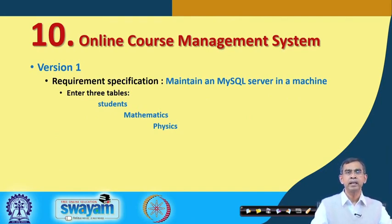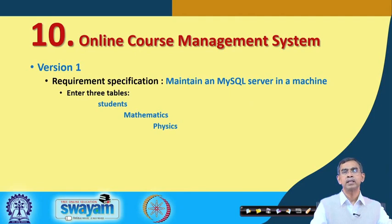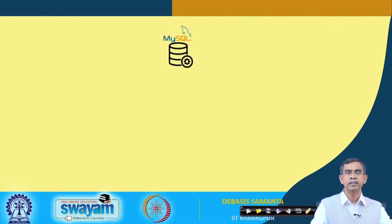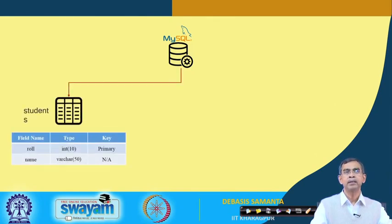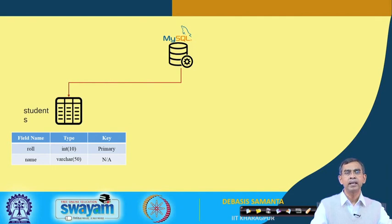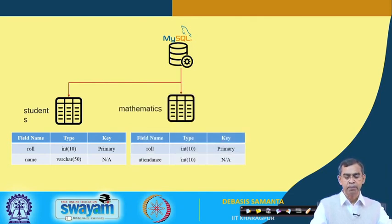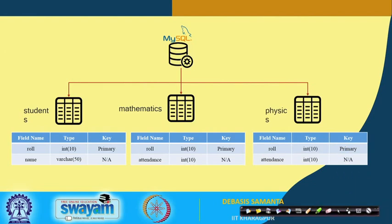For simplicity, maintain a database server on a machine connected to the network. The database server contains three tables: a student table, a mathematics table, and a physics table, all maintained in the MySQL server. For the student table, fields include roll number (integer of size 10) and name (varchar of size 50), with roll number as the primary key. For maths and physics, the roll number, attendance, and marks obtained need to be maintained.